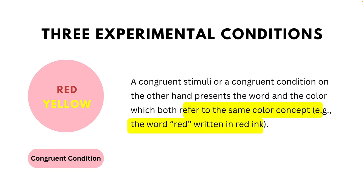A congruent stimulus presents the word and the color which both refer to the same color concept — for example, the word 'red' written in red ink, or the word 'yellow' both reading yellow and colored in yellow, as presented in the schematic.